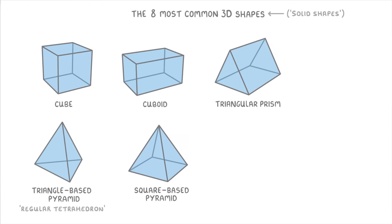Then the last 3 shapes to know are the sphere, which is like a tennis ball or a football shape, the cylinder, which is like a can of coca-cola, and the cone, which is like an upside-down ice cream cone.